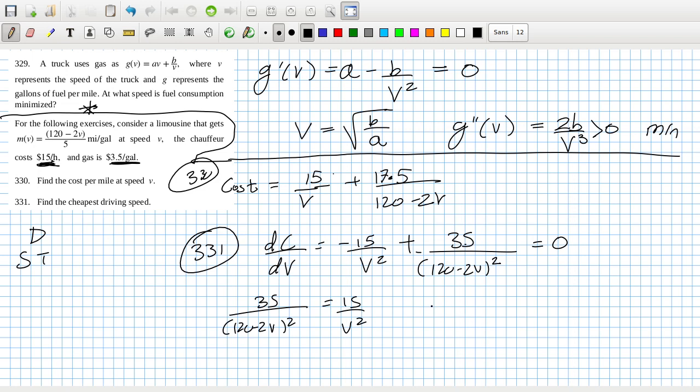So that means 35 over 120 minus 2v squared equals 15 over v squared. Square root everything. The v has to be positive. The v has to be positive. I guess there could be a plus minus situation here, but I don't think we have to consider that. And let's continue.